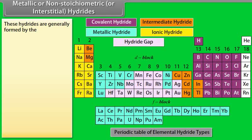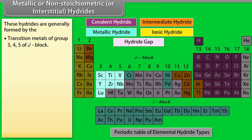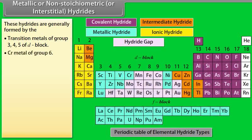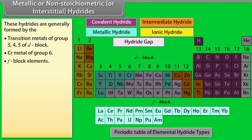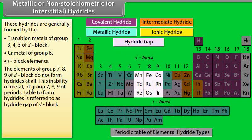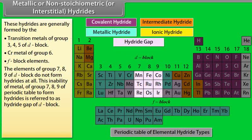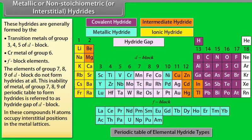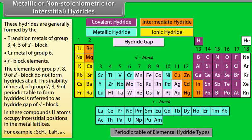Metallic or non-stoichiometric or interstitial hydrides. These hydrides are generally formed by the transition metal of group 3, 4, 5 of D minus block, D minus block metal of group 6, F minus block metals. The elements of group 7, 8, 9 of D minus block do not form hydrides at all. This inability of metal of group 7, 8, 9 of periodic table to form hydrides is referred to as hydride gap of D minus block. In these compounds, H atoms occupy interstitial positions in the metal lattices. For example, SCH2 LAH2.87.